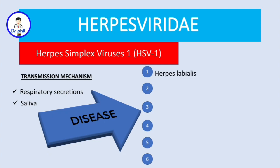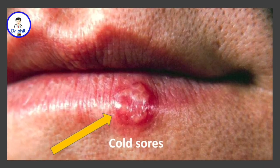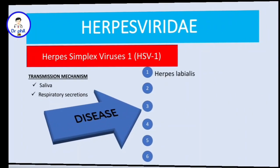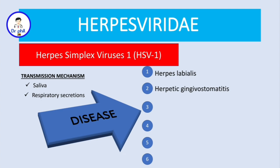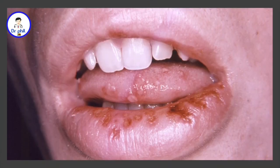The first one is called herpes labialis — also known as cold sores. The second one is known as herpetic gingivostomatitis, and it looks like this.